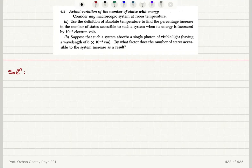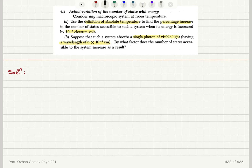Consider the actual variation of the number of states with energy. Consider any macroscopic system at room temperature. Use the definition of absolute temperature to find the percentage increase in the number of states accessible to such a system when its energy is increased by 10⁻³ electron volts. Suppose that such a system absorbs a single photon of visible light having a wavelength of 5×10⁻⁵ centimeters. By what factor does the number of states accessible to the system increase as a result?